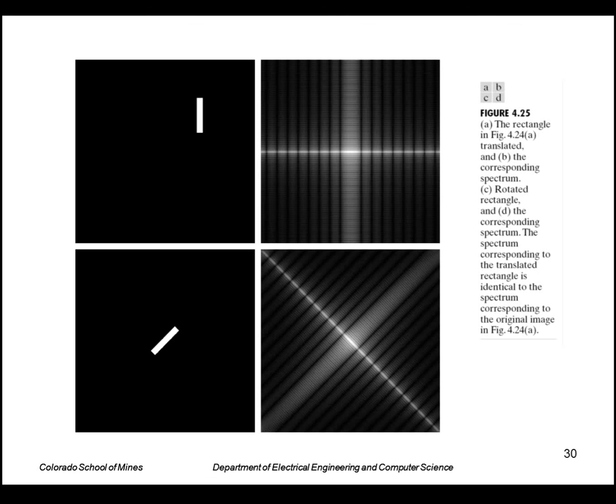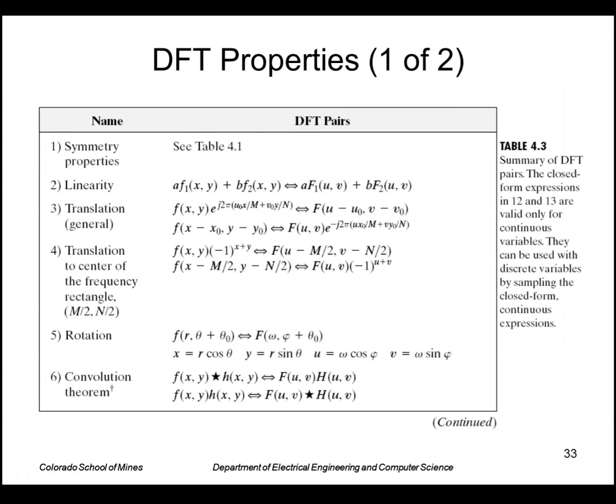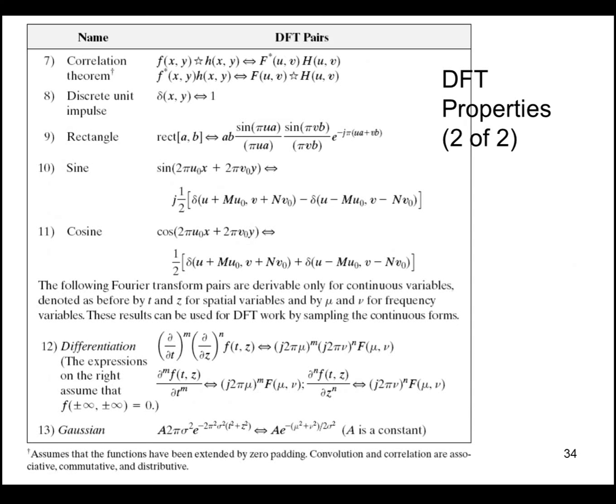If we rotate the object, let's say 45 degrees, that rotates the spectrum by the same amount. This is a summary of all the properties we've seen so far: linearity, translation, rotation. Here's the convolution theorem. Here are those Fourier pairs of sine, cosine, rectangle, differentiation, and Gaussian.